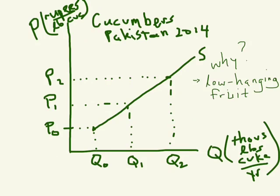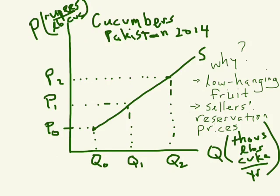The other reason we get this upward sloping supply is that as price rises more sellers enter the market. Sellers have their own reservation prices. Some sellers can grow cucumbers easily — they have land right by the river with very fertile soil. Other growers may be further from the river or have less productive land. As price rises, those sellers will start growing cucumbers instead of doing whatever else they were doing, because the price has risen above their seller's reservation price.